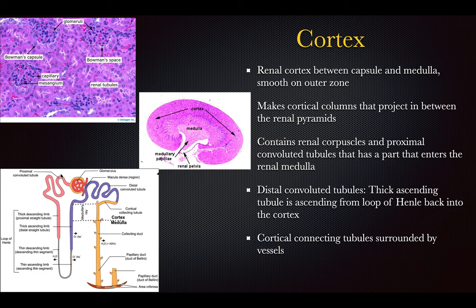Tracing the nephron track: the proximal convoluted tubule goes down through the thick descending limb, then changes into the thin descending limb, and then goes back up through the thin ascending limb into the thick ascending limb, then into the glomerular area for blood exchange. From there, flow continues through the distal convoluted tubules, collecting tubules, collecting ducts, the papillary duct, and into the calyx.